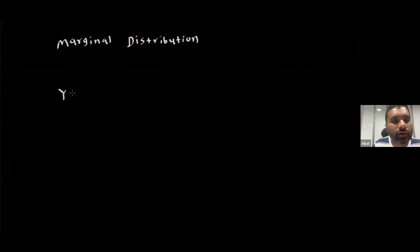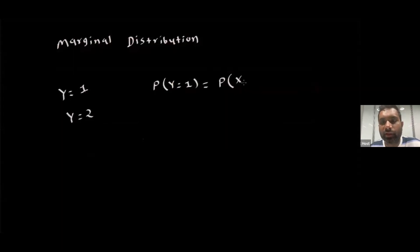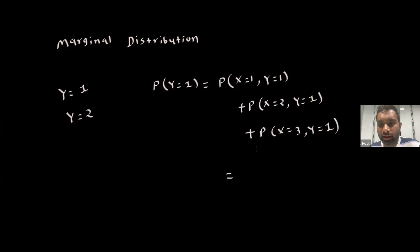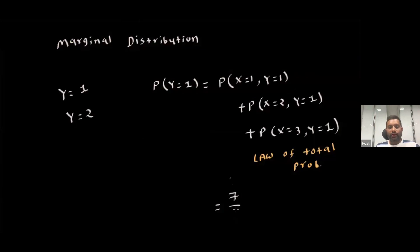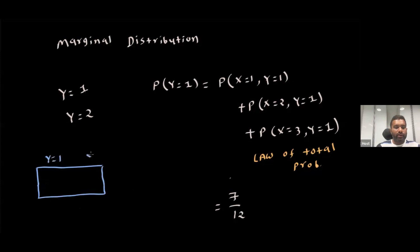For Y=1, by the law of total probability (summing over X=1, 2, 3), this sum comes out to be seven-twelfths. You can create a marginal distribution table: for Y=1 it is 7/12, and for Y=2 it is 5/12 (you can sum or just do one minus). This is the marginal distribution. Can you also obtain the conditional distribution?